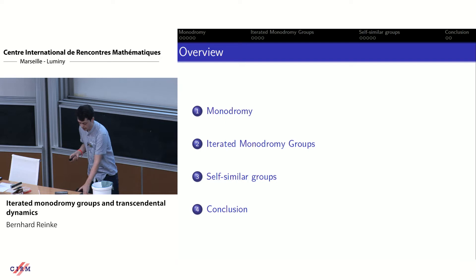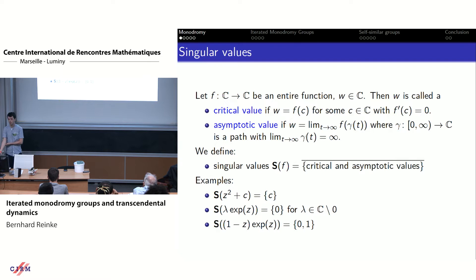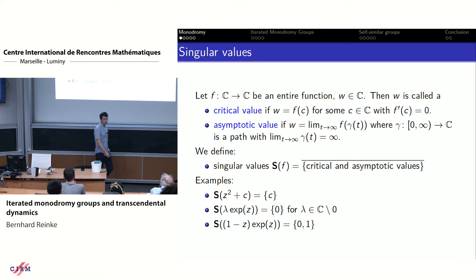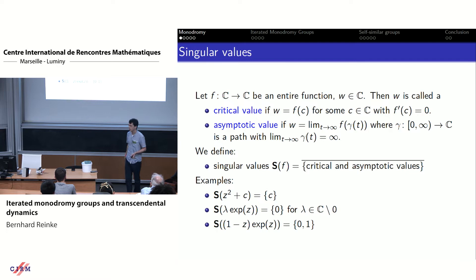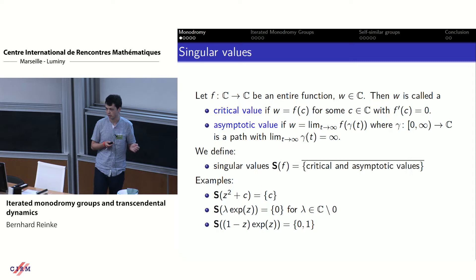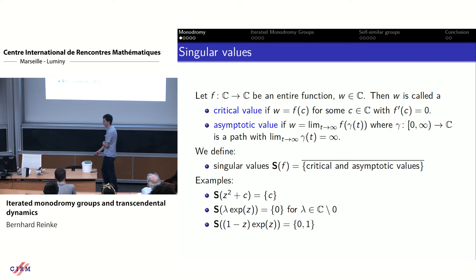In order to discuss monodromy, I want to do a brief recap on singular values. What's important is this function, 1 minus z times the exponential function. This function has two singular values: 0 and 1. Zero is an asymptotic value, which you can see by going off to negative infinity — applying the function gets you close to 0. Its only critical value is 1, which is the image of 0, the only critical point. I will work with this function during most of my talk.